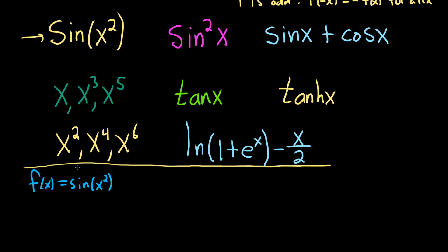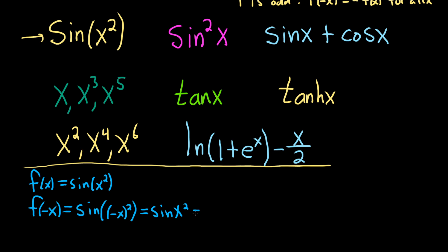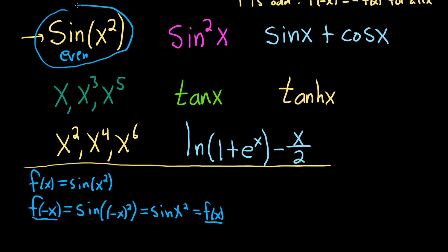To directly test the definition, all we do is replace x with minus x. So f of minus x equals sine of negative x squared. When you square negative x, you just get x squared — it eats the negative sign because x squared is even. So you just get sine of x squared, which is f of x. Since f of negative x equals f of x for all x, this one is even.